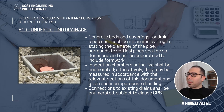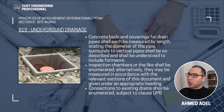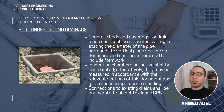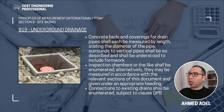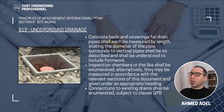Surrounds to vertical pipes shall be so described and shall be understood to include the formwork. Inspection chambers or the like shall be enumerated, or alternatively they may be measured in accordance with relevant sections of this document under an appropriate heading. Connections to existing drains shall be enumerated, subject to clause GP-A — general principles. Concrete beds and coverings, if made of concrete to protect drain pipes, shall be measured by length, stating the diameter of the pipe the bedding or covering should cover.